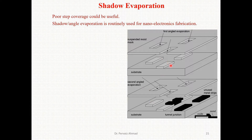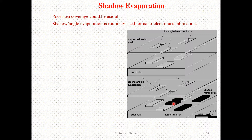For a second deposition on top of the first thin film, we place another shadow mask at a different location — this is called second-angle evaporation. The result is that we join the two thin films during the second evaporation using masking patterns, allowing us to create structures such as tunnel junctions and metal straps.